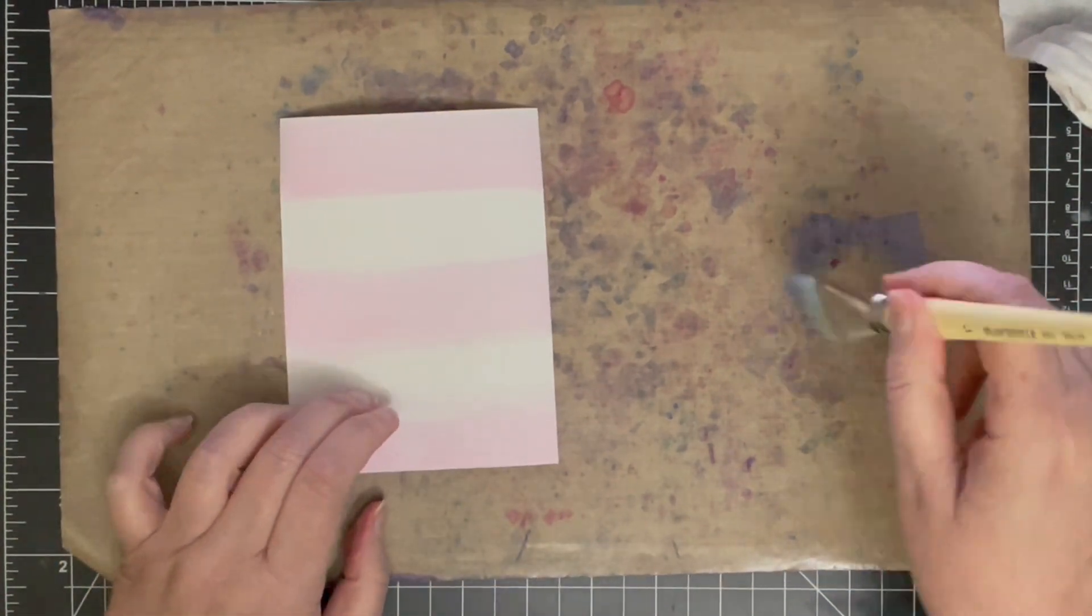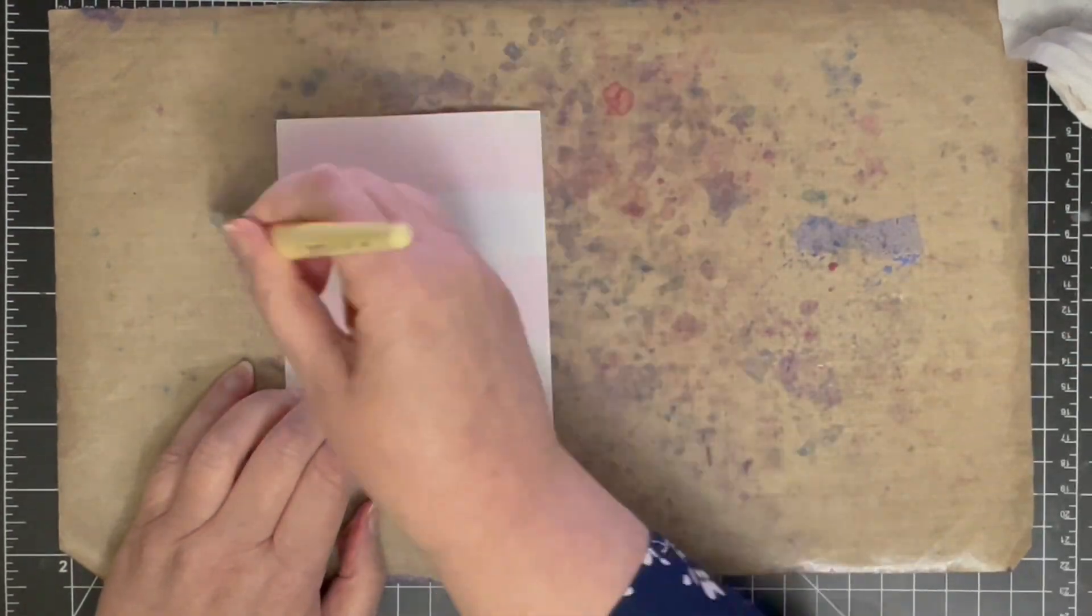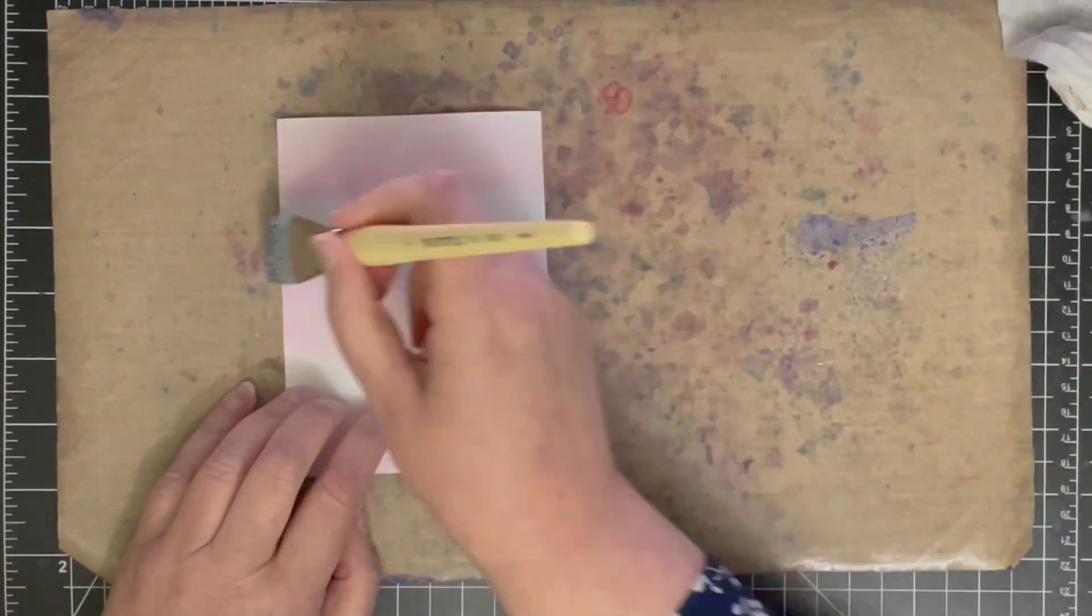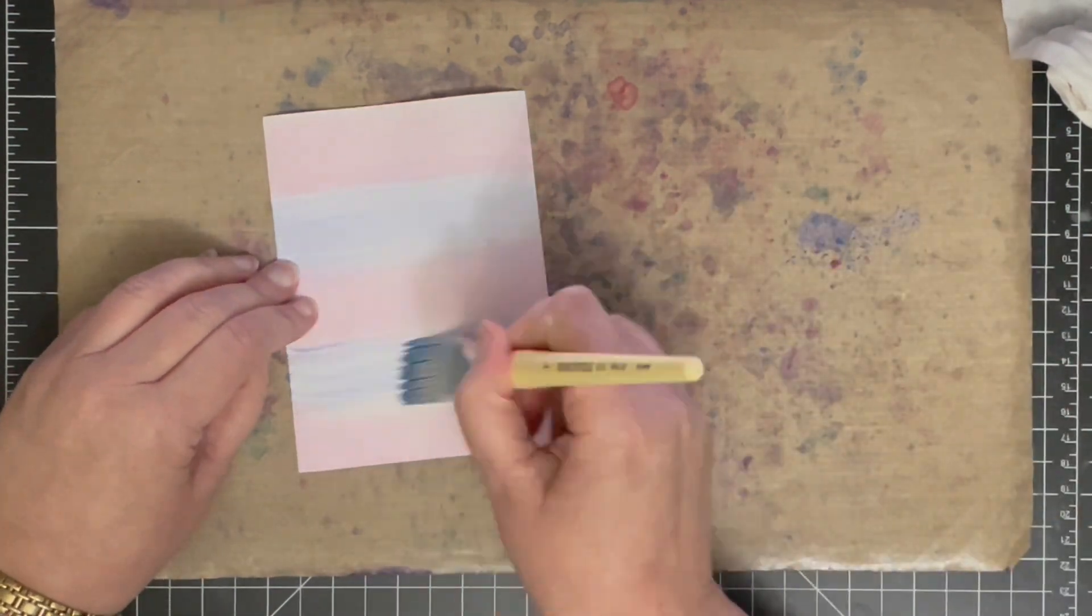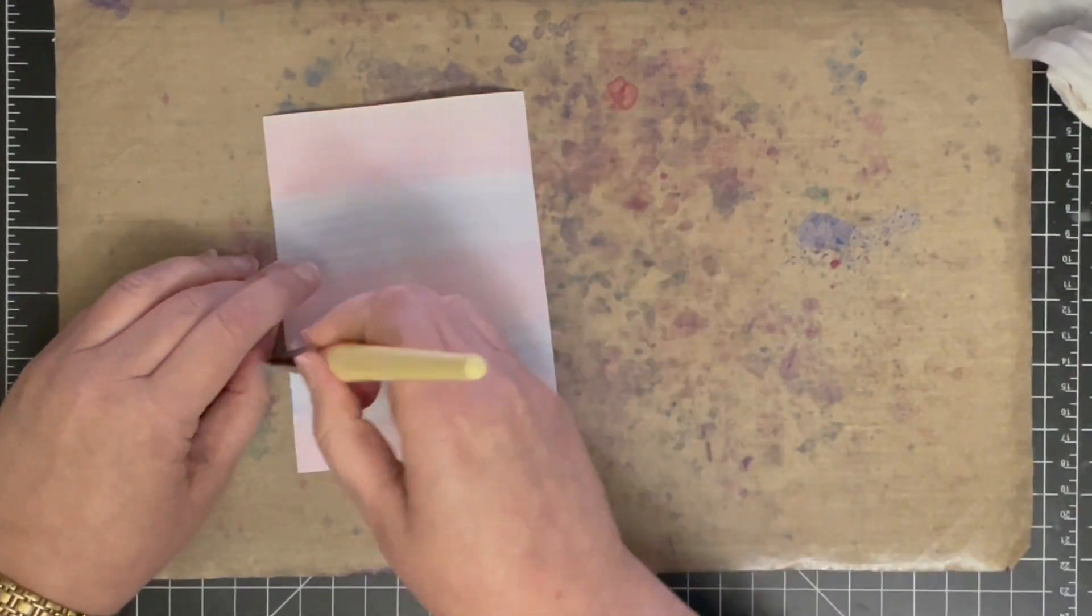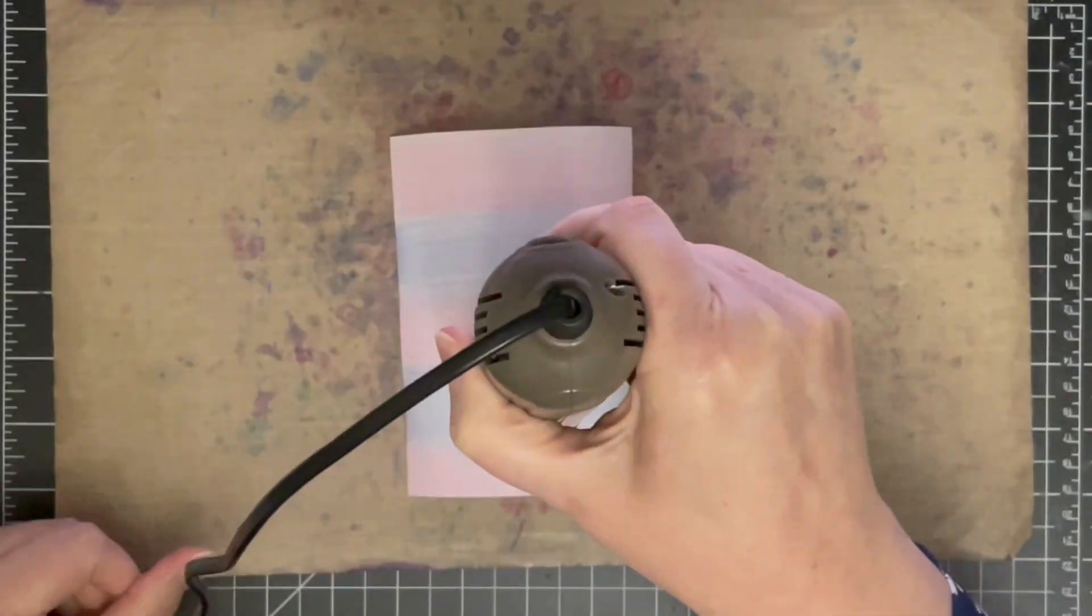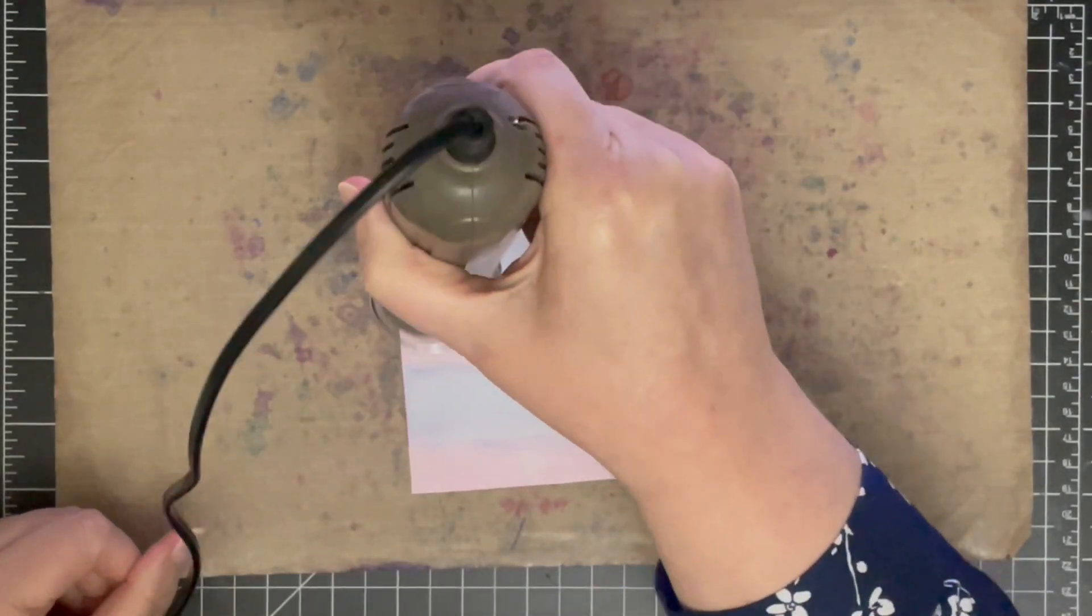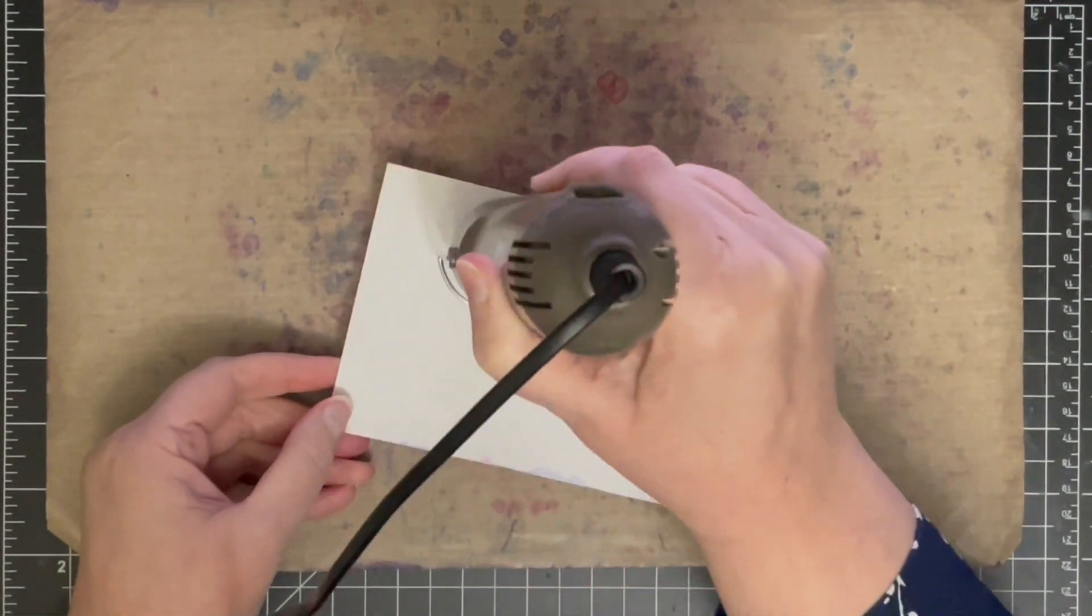Now I'm adding some Blueprint Sketch which when you water it down gives you a really pale purpley blue color which I really like. I didn't want this to be really intense at all, I wanted it super pale. Now I did add quite a fair bit of water so I'm just using my heat tool here to dry off my panel.